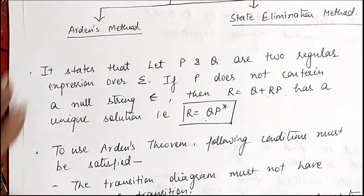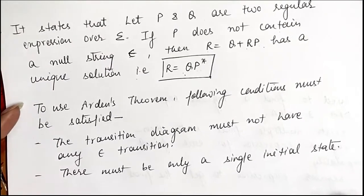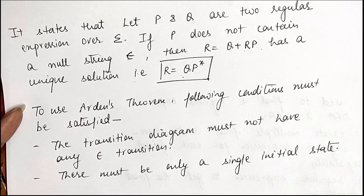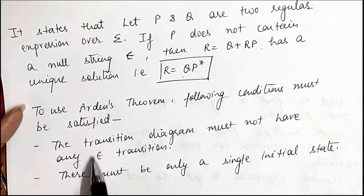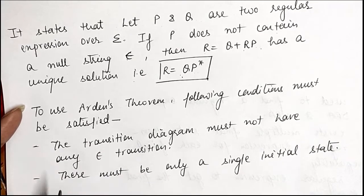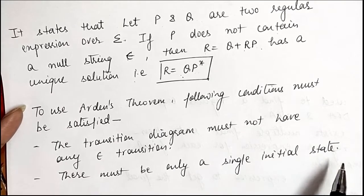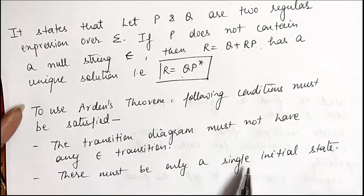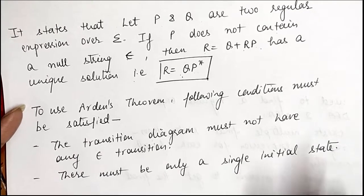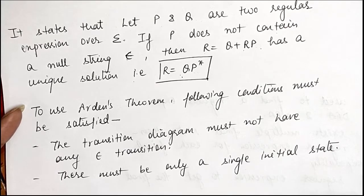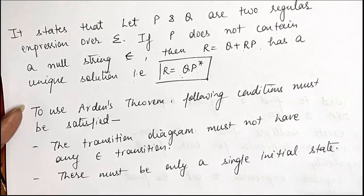To use Arden's theorem, the following conditions must be satisfied. The first condition is that the transition diagram or DFA must not contain any epsilon transitions. The second important condition is that there must be only a single initial state. Only if these two conditions are satisfied for a particular DFA can we use the Arden's method.